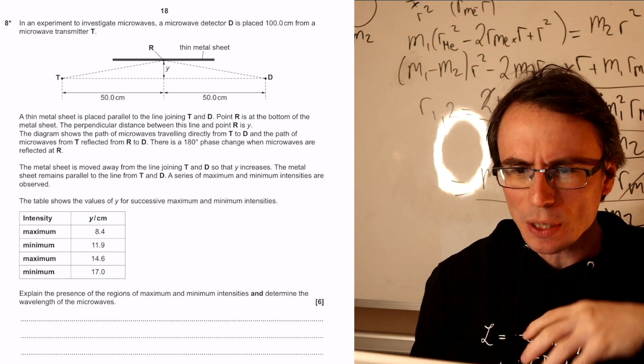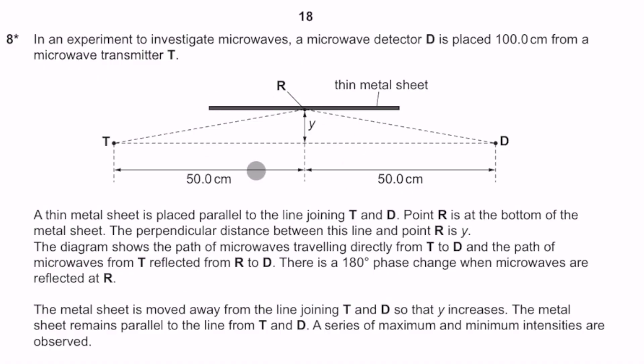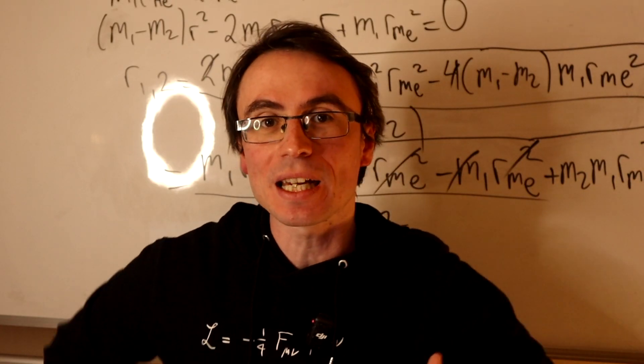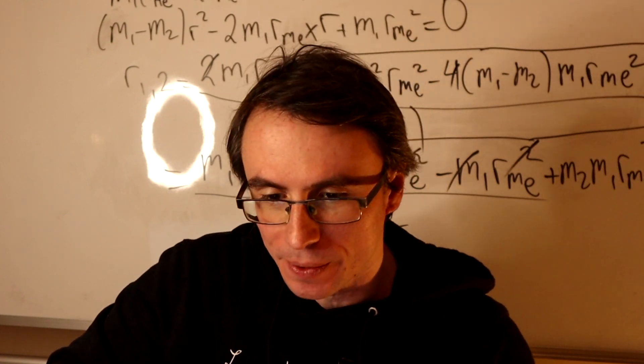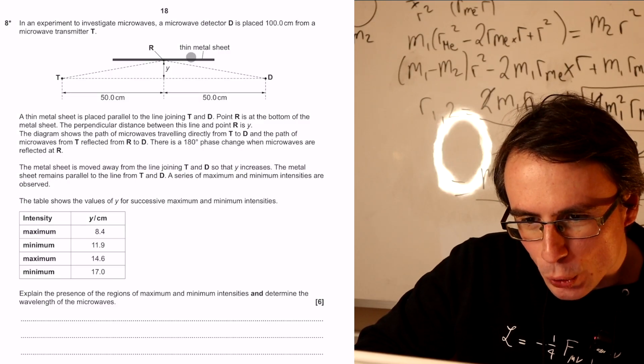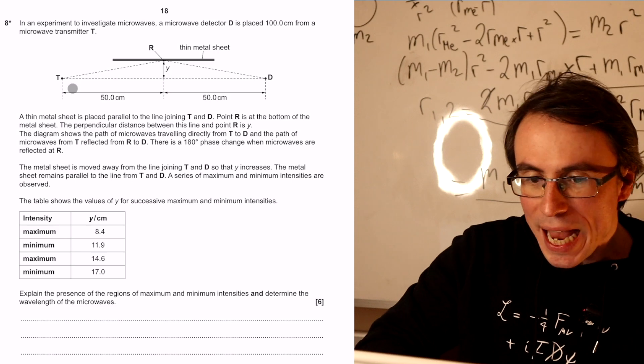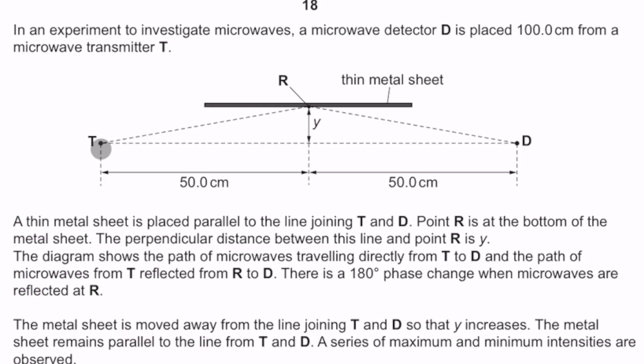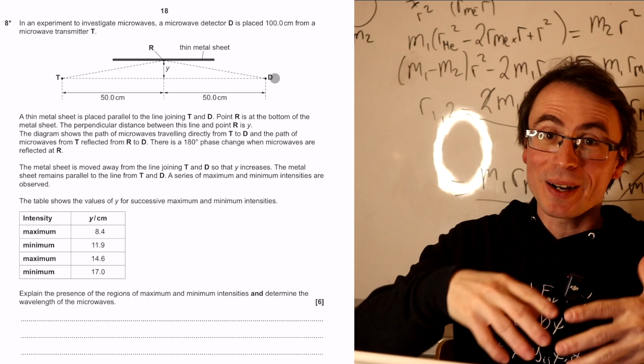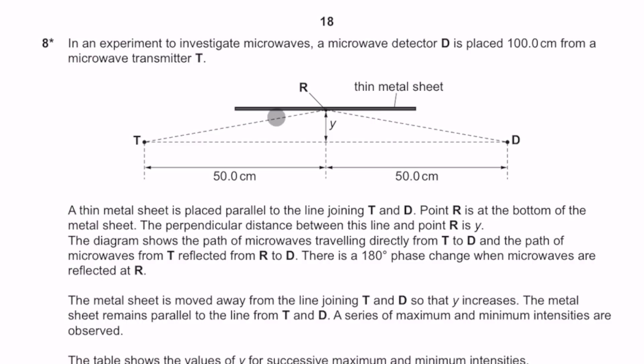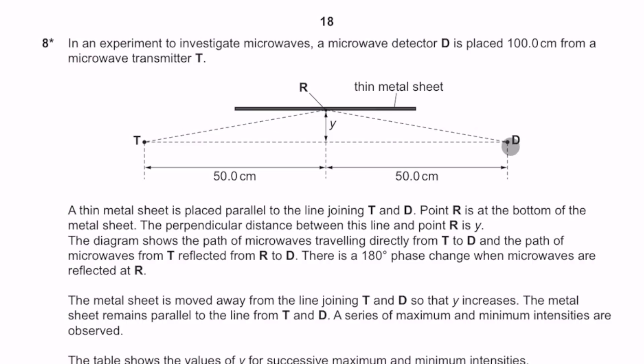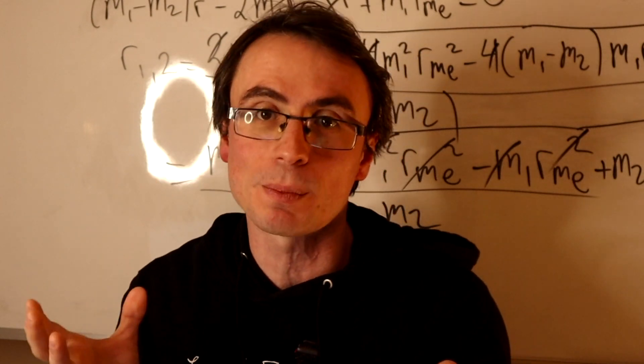So we have an experiment to investigate microwaves. As soon as I see this setup, I'm already thinking about the actual path difference. We have this thin metal sheet and this distance y. Some of the waves are going to go from t all the way to d directly, whereas some of the waves are going to go along here and then they're going to be reflected and there's going to be a path difference between those.